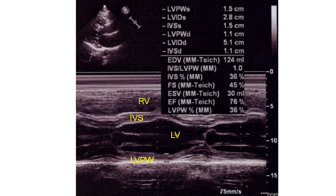Usually, the M-mode cursor is guided by a two-dimensional image in the parasternal long axis view. The position of the cursor corresponds to the M-mode cut. The cut is at the caudal level for left ventricular measurements. The following measurements are marked out in the M-mode tracing.